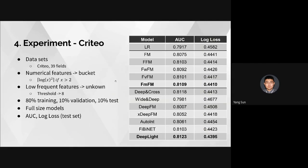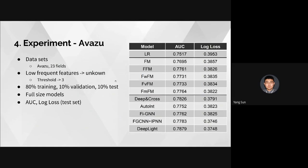In the last part, we show experimental results on model performance. We use the full-size model on the Criteo and Avazu datasets — two famous and popular benchmark datasets. Following the standard process with 80% training, 10% validation, and 10% test, we observe AUC and log loss. FM-Square achieves the best performance within the FM model family and similar scenarios when compared with DNN models.